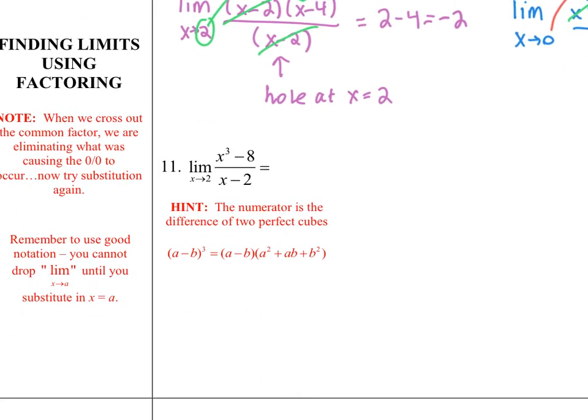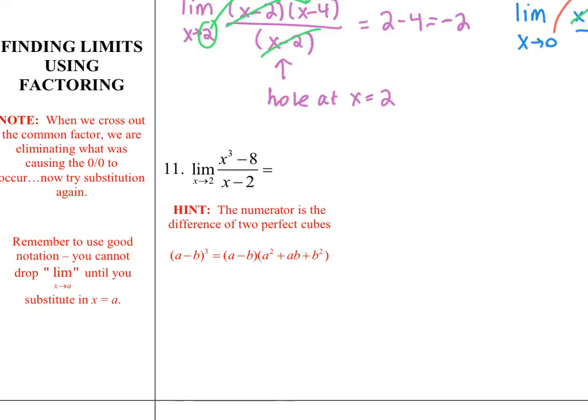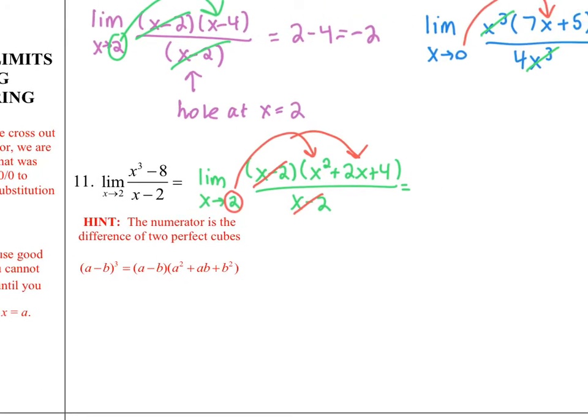On question number 11, I first have to factor that numerator using the difference of two perfect cubes, which I have the formula listed right here for you. And once I get this factored, I can see that x minus 2 common factor, I can cancel out, eliminates my problem of causing that 0 over 0. And now I can just take my 2, and I can substitute it into what's left, and that's going to give me 2 squared plus 2 times 2 plus 4. And my final answer here is 12.